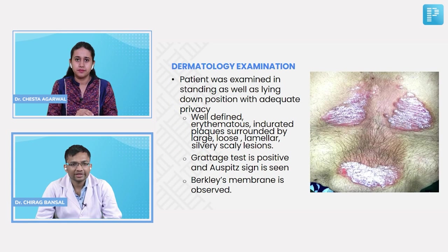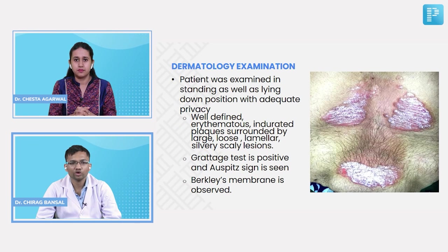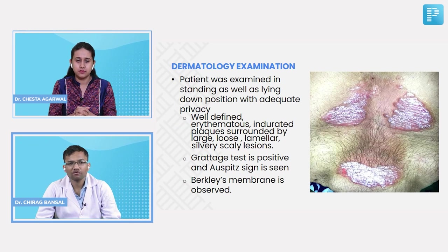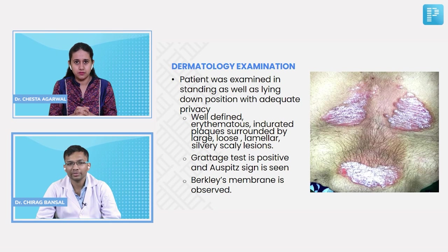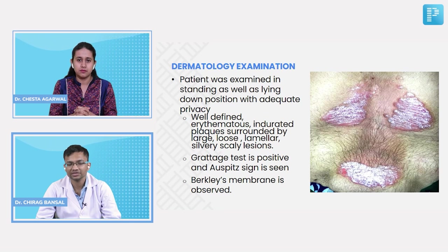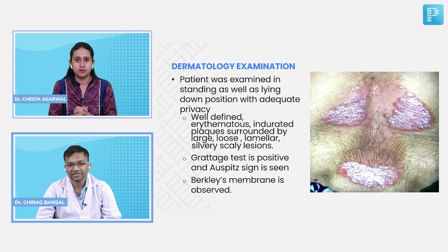Moving to dermatological examination: the patient was examined standing and lying down with adequate privacy. There were well-defined erythematous indurated plaques surrounded by large, loose, lamellar, silvery scaly lesions. Grattage test is positive and Auspitz's sign is also seen. Brocq's membrane is also observed on examination.